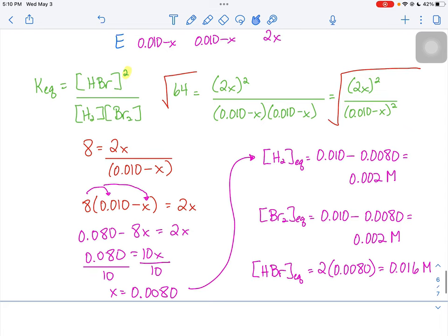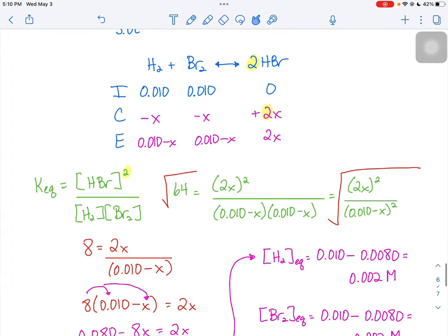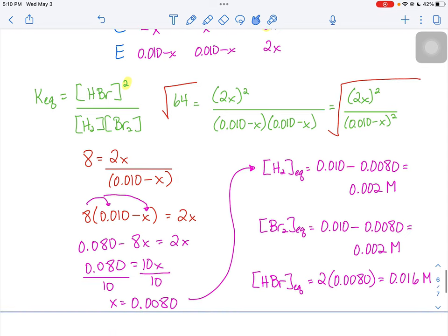And hydrobromic acid was 2X, so we take that value of X and double it, and we can get the equilibrium molarity for the hydrobromic acid.